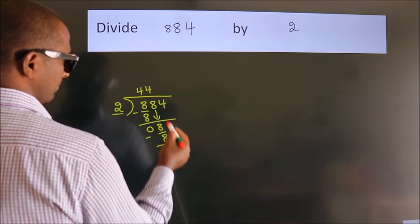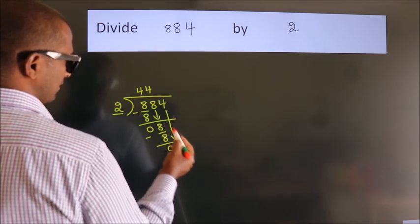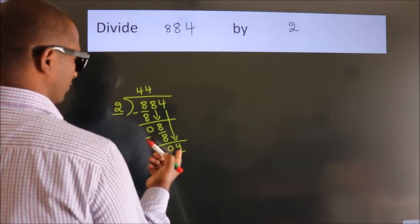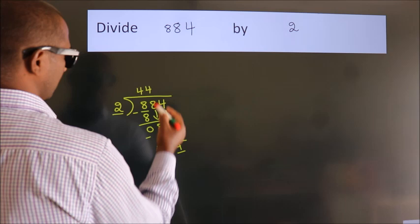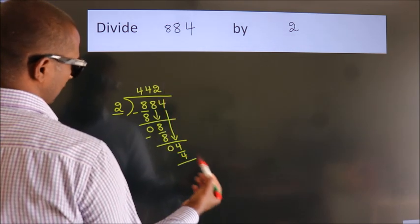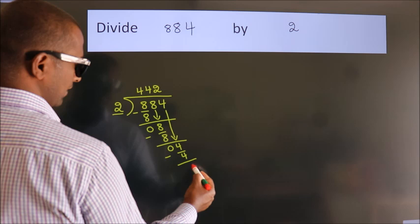After this, bring down the beside number. So, 4 down. 4. When do we get 4? In 2 table, 2 twos, 4. Now, we subtract. We get 0.